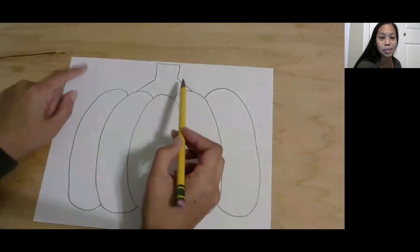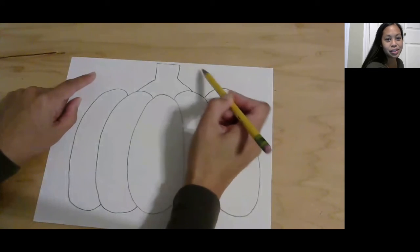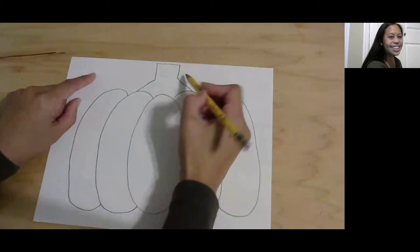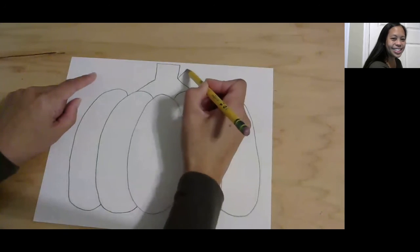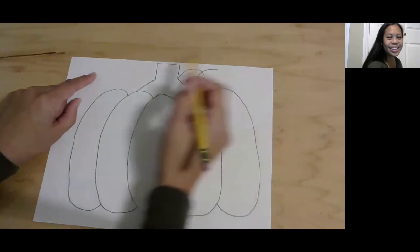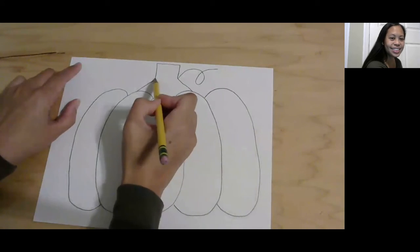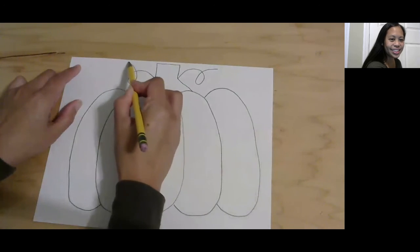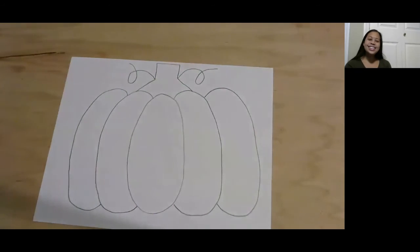If you like, something else pumpkins have is they kind of have these vines that come off. Shall we make some vines? Let's make some vines. Kind of a curly cue, and it goes like that. You can do it on the other side too. It's just kind of like a curly cue like that. Awesome!